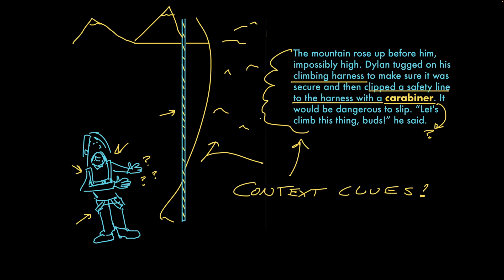Right? He does that with the carabiner. And we also know that they keep you safe somehow, carabiners do. We know this because the paragraph says it would be dangerous to slip. So, the harness, and the carabiner, and the safety line must all prevent dangerous slipping somehow.